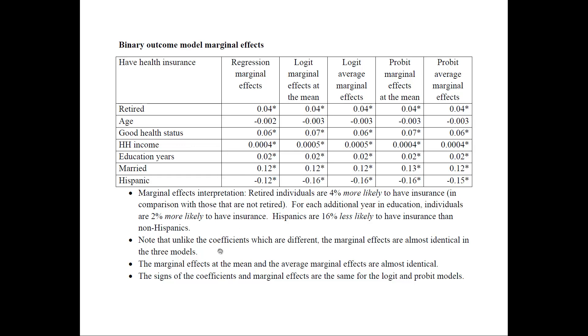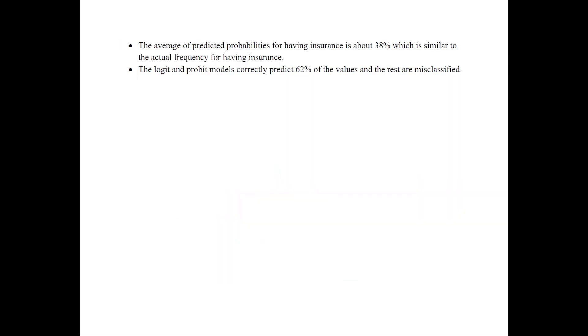Even though the coefficients differed, the marginal effects across models are very, very similar. The marginal effects at the mean and average marginal effects are also very similar, so in practice it doesn't matter which approach you use. The signs of the coefficients and marginal effects are the same for logit and probit, which comes from the formula. Also, the average predicted probability is about 38%, very close to the actual frequency, and the probit and logit models correctly predict 62% of values — an okay but not great fit.